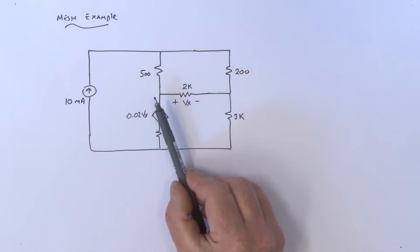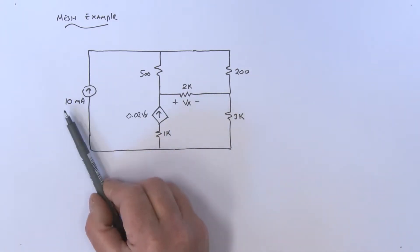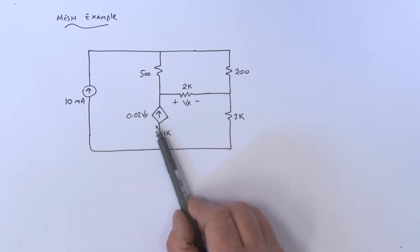Let's have a look at this example. We have a current source that's 10 milliamps. We have this guy over here which is also a current source, but this is a dependent current source. The value of that current is actually dependent upon a voltage, and that voltage is Vx.